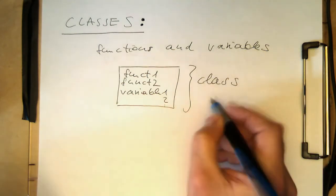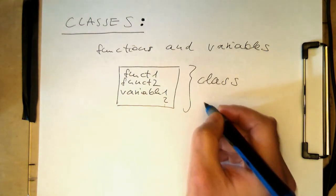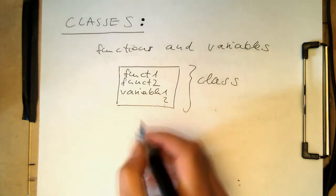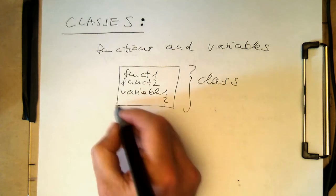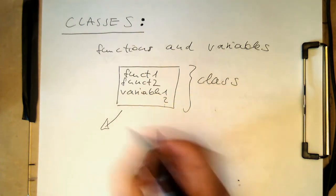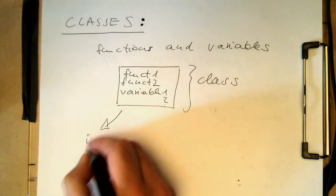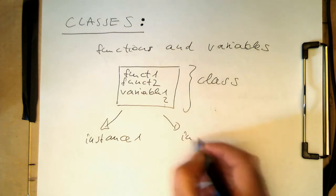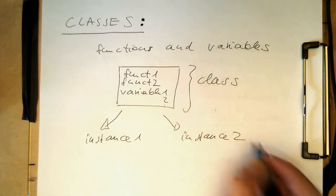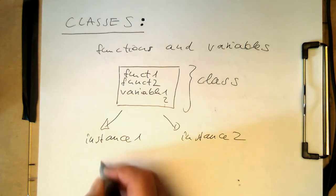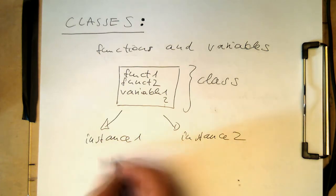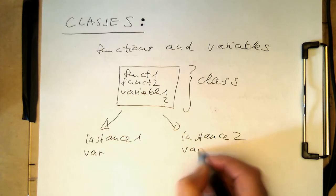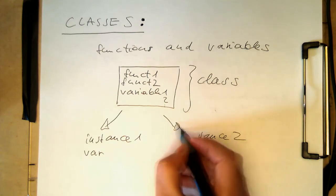The class itself is not directly something which can be used. The class needs to be instantiated, so you can create different instances of this class in the program. So this becomes instance 1, and this becomes instance 2 — and those are essentially variables containing the class. So we can create different instances of that.